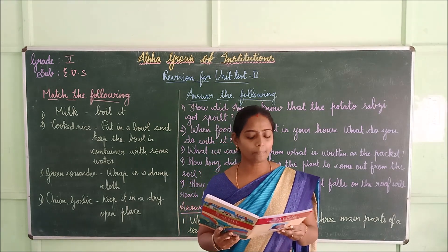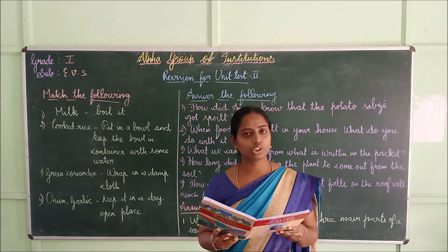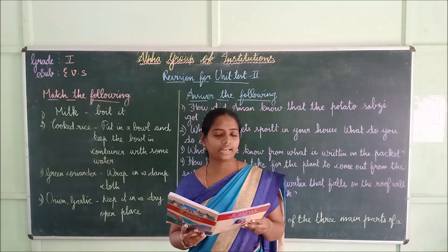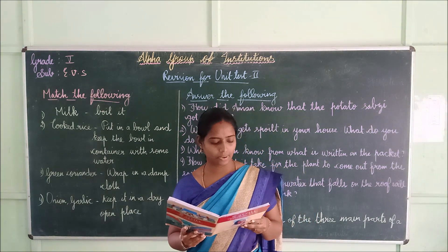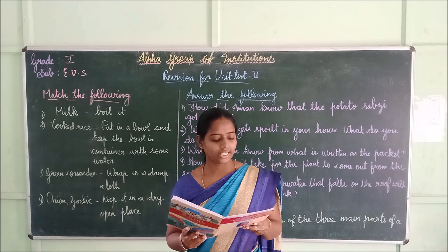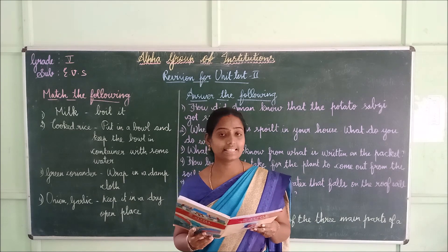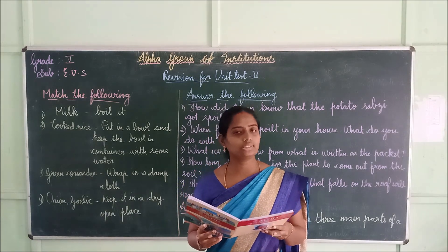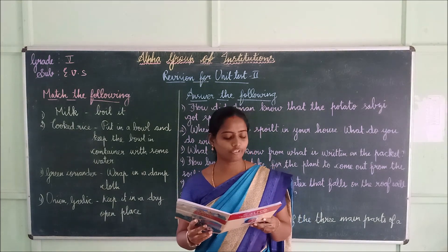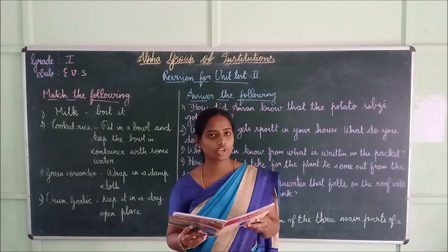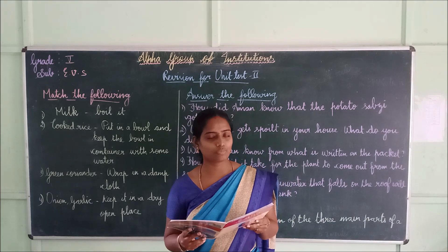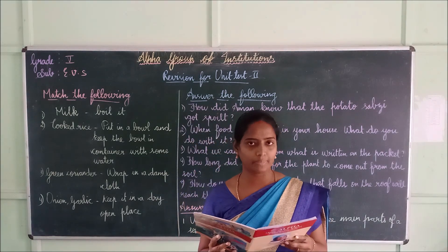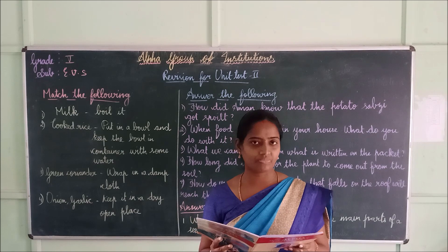Second one: banana plants grow without seeds — answer is banana, B-A-N-A-N-A. Third one: sesame seeds took the most number of days for the sprout to come out of the soil — answer is sesame, S-E-S-A-M-E.